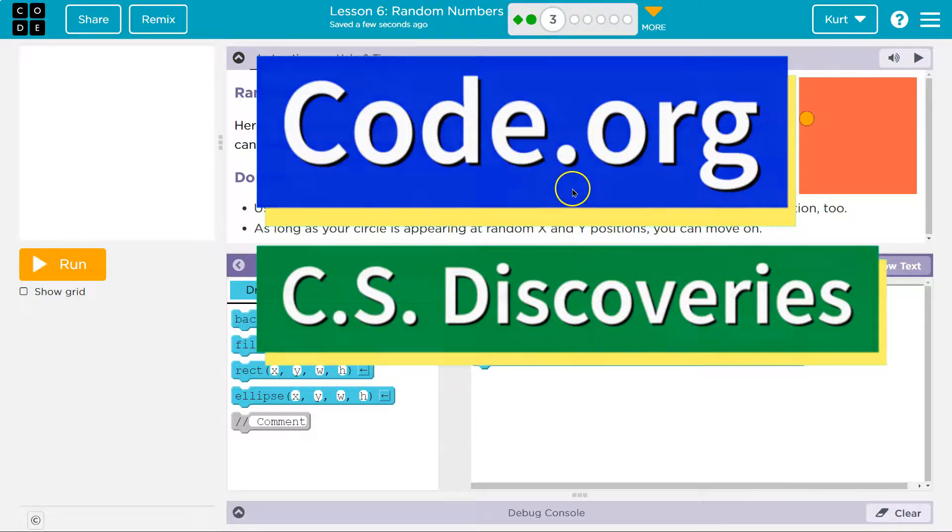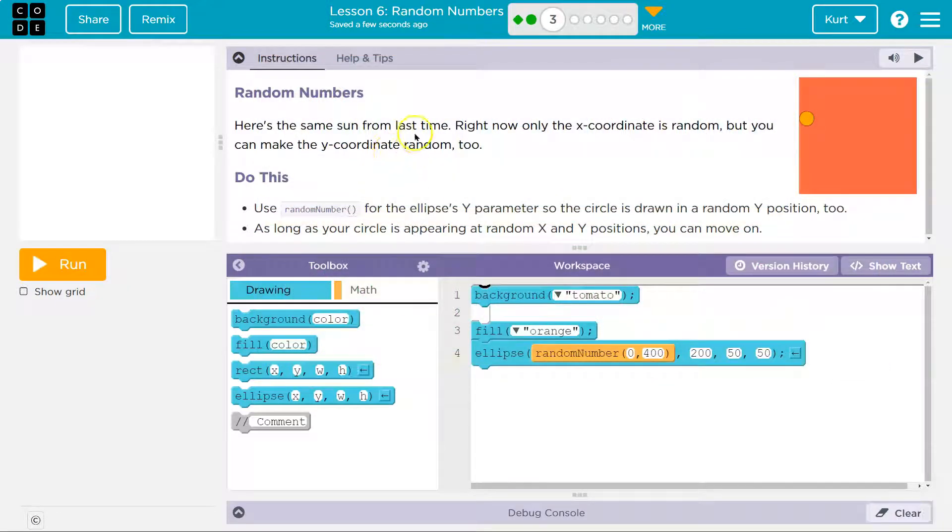This is code.org. Let's see what we're doing. Random numbers. Here's the same sun from last time, the last bubble. Right now only the x-coordinate is random, but you can make the y-coordinate random too.